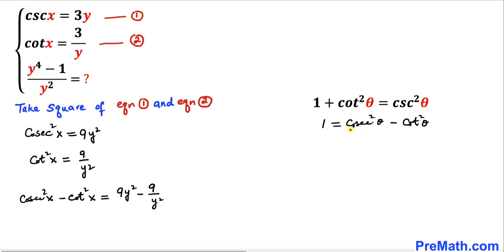But we know that cosecant squared theta minus cotangent squared theta is 1. Therefore this quantity on the left hand side becomes simply 1. So we got 1 on the left hand side equals to, and here I'm going to factor out 9: y squared minus 1 divided by y squared.